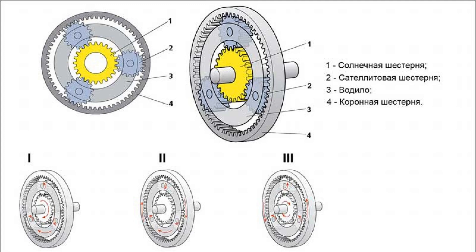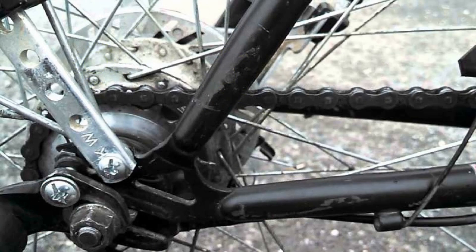In the automatic box, the principle is different. The choice of the necessary mode of movement is carried out by locking the corresponding gears of the planetary mechanism. The design of the planetary gearbox includes a sun gear taking rotation from the torque converter through an element called the driver, to which are connected satellites in the number of three or four pieces. Satellites are connected to the crown gear, also called ring gear. All elements of the planetary gear contain a friction-type brake mechanism — in rare cases, band brakes — which is used to lock the gears.